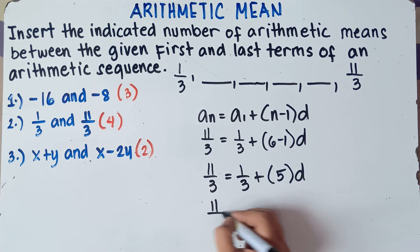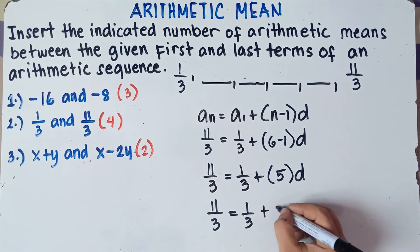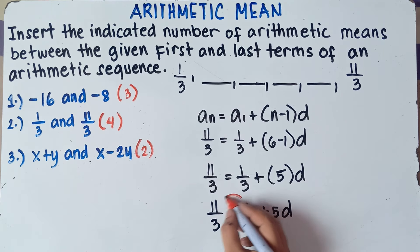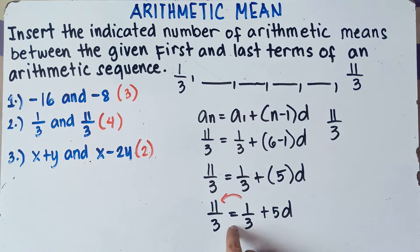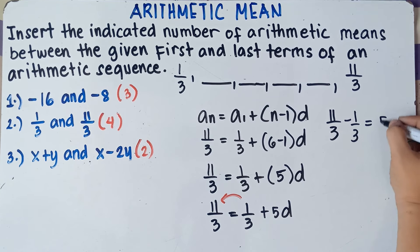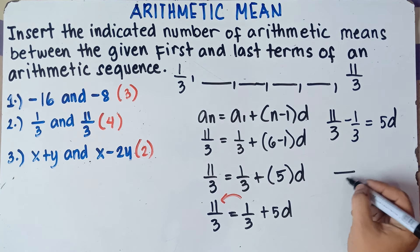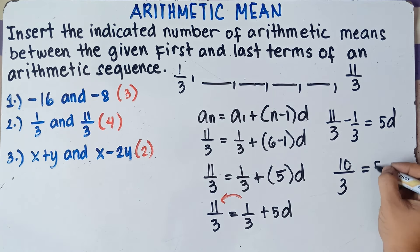So 11 over 3 equals 1 third plus 5d. To get the value of d, transpose 1 third from the right to the left — change the sign. So 11 over 3 minus 1 over 3 equals 5d. Since they have the same denominator, copy the denominator and subtract the numerator: 11 minus 1 is 10, so 10 over 3 equals 5d.